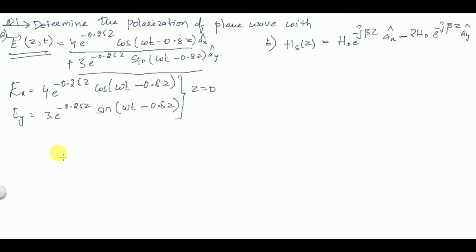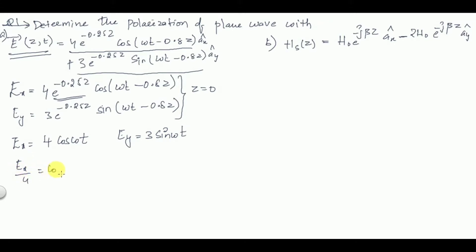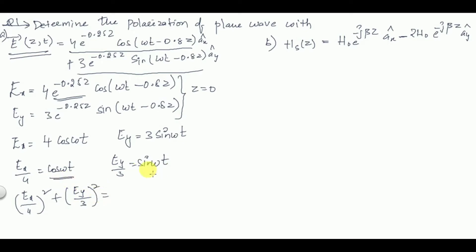To find the polarization, we consider the simple plane z = 0. Substituting z = 0 into the two equations: e^0 = 1, so E_x = 4·cos(ωt) and E_y = 3·sin(ωt). Therefore E_x/4 = cos(ωt) and E_y/3 = sin(ωt). Taking (E_x/4)² + (E_y/3)² gives cos²(ωt) + sin²(ωt) = 1.